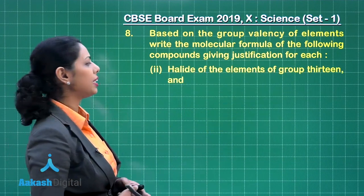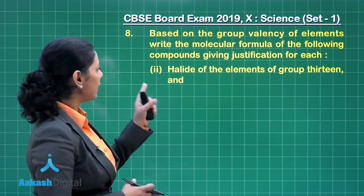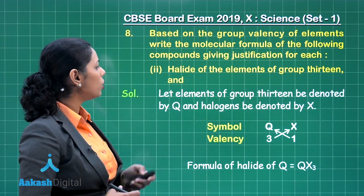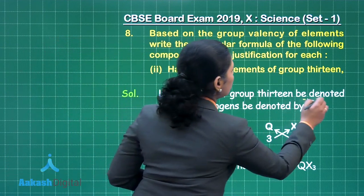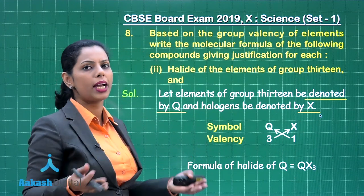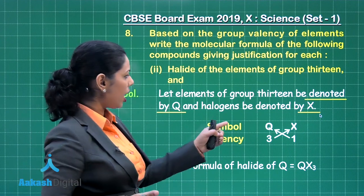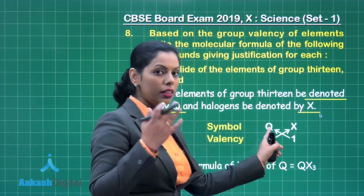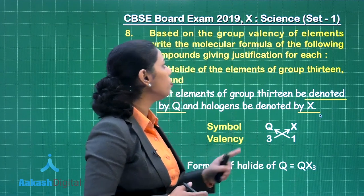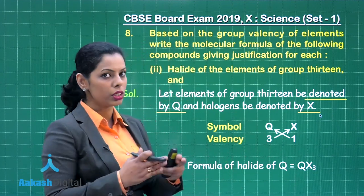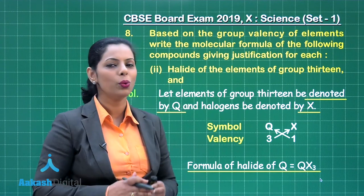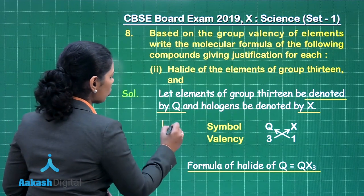For the second part — halide of elements of group 13 — assume the group 13 element is Q and the halogen is X (since halide is specified, not chloride, bromide, or iodide specifically). The valency of halogen is 1 and the valency of a group 13 element is 3. Criss-crossing gives the molecular formula QX₃, earning 1 mark.